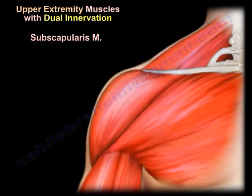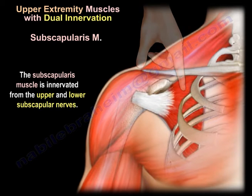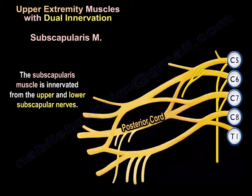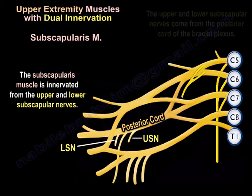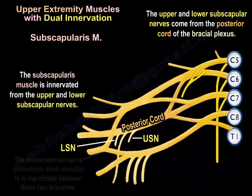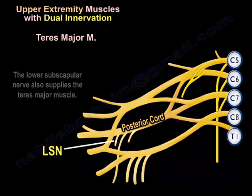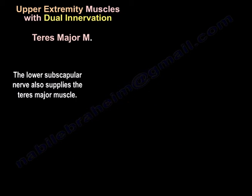The subscapularis muscle also has dual innervation. It is innervated by the upper and lower subscapular nerves, which come from the posterior cord of the brachial plexus. The thoracodorsal nerve, supplying the latissimus dorsi muscle, lies between these two branches. The lower subscapular nerve also supplies the teres major muscle.